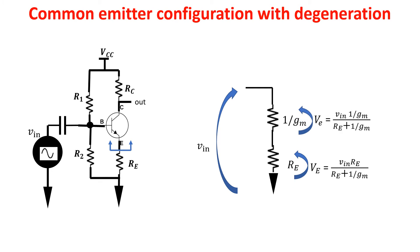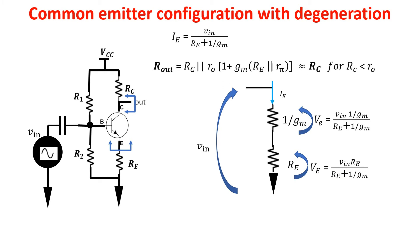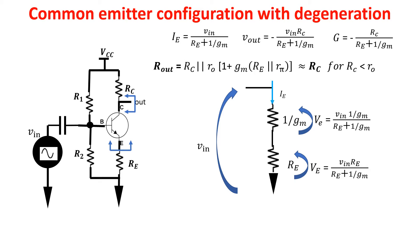The small signal current flowing through the BJT is obtained by dividing the voltage VIN by the total resistance. Vout is the current times the resistance on the output, RC, assuming RC is less than RO. So Vout and the gain are defined accordingly. The minus sign is because the signal is inverted with respect to the input: as the current increases, the voltage Vout decreases.